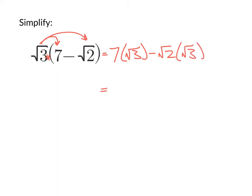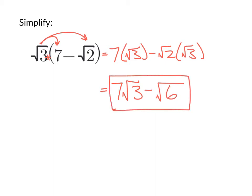When we simplify 7 times the square root of 3, we write it as 7√3. When multiplying two square roots together, we can put them under one square root and multiply 2 and 3 to get √6. So here is our simplified expression: 7√3 minus √6.